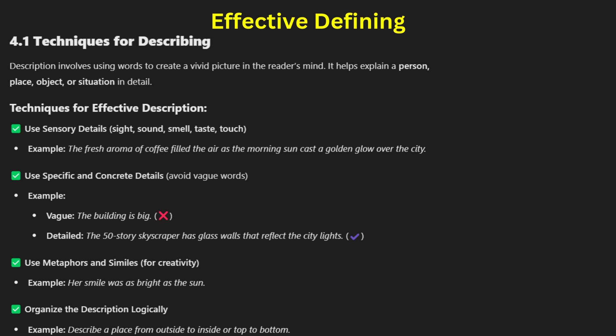Definitions should be precise and unambiguous, avoiding circular explanations. For example, saying 'happiness is the state of being happy' is unhelpful, while 'happiness is a feeling of contentment and joy that arises from fulfilling experiences' is a clearer definition. A strong definition ensures the reader understands the subject without confusion.